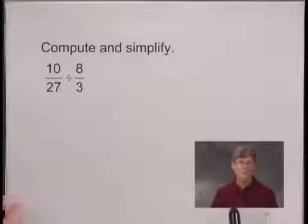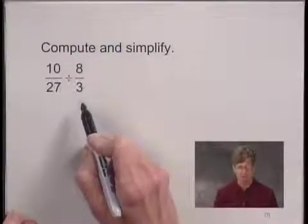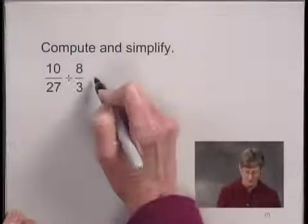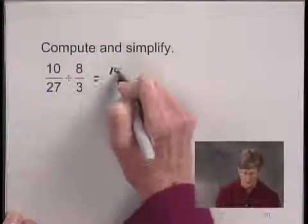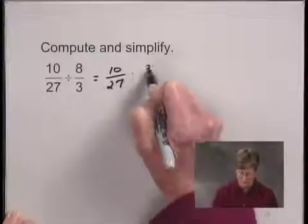When we divide using fraction notation, the first thing we do is rewrite the divisor and multiply by its reciprocal. So we'll multiply 10 over 27 by the reciprocal of 8 thirds, which is 3 over 8.